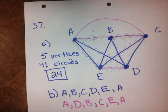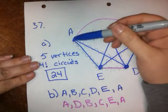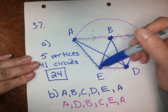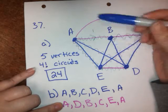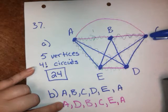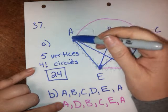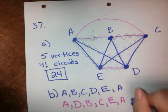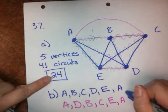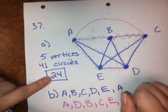So, okay, we found one that went from A to B to C to D to E to A, and we found another one that went from A to D to B to C to E to A. Those were both Hamilton circuits. Those are two of the 24 possible Hamilton circuits.